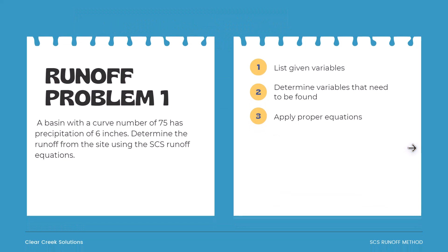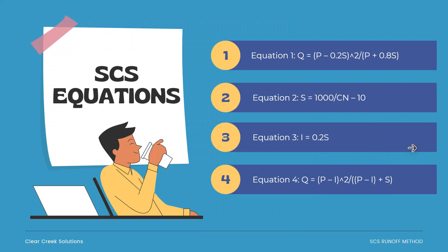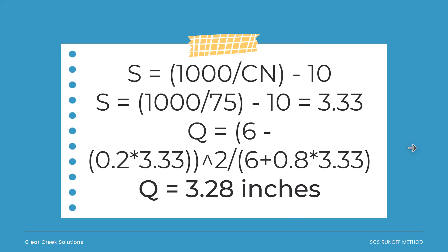Let's get into runoff problem number one. A basin with a curve number of 75 has precipitation of 6 inches. Determine the runoff from the site using the SCS runoff equations. First, list the given variables, determine what needs to be found, and apply the proper equations. S equals 1,000 divided by 75 minus 10, which equals 3.33. Then using Q equals P minus 0.2S squared divided by P plus 0.8S: Q equals 6 minus 0.2 times 3.33, squared, divided by 6 plus 0.8 times 3.33. The result is 2.8 inches of runoff depth.